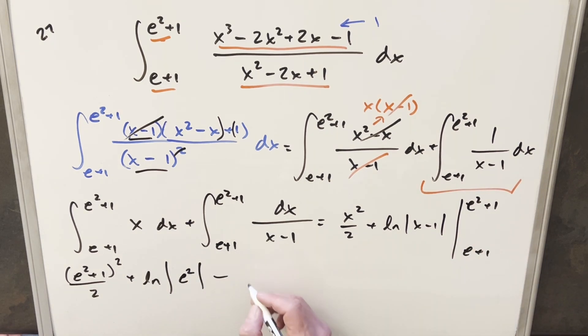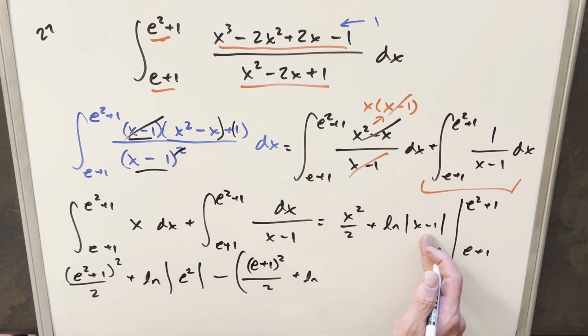And then for the next part, we're going to have minus. Plugging in e plus 1, we're going to have e plus 1 squared over 2. And then for our natural log part, again, the ones are going to cancel out with the minus 1, we just have natural log of e. Well, natural log of e is just 1.